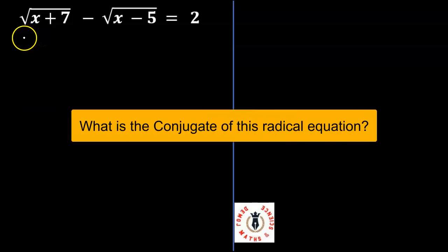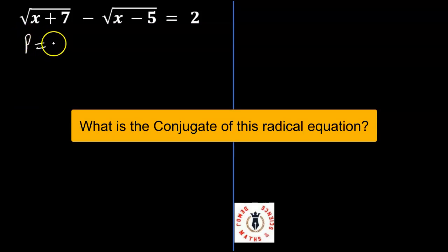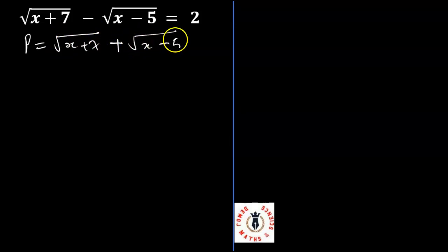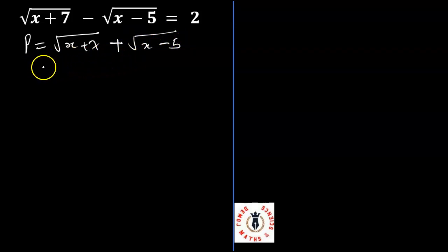The first question is what is the conjugate of this expression? Let's call the conjugate of this expression P. P is equal to the root of x plus 7 plus the root of x minus 5. In case you missed a lesson on how to express conjugates, I will attach a link in the description where we explain how to come up with conjugates.